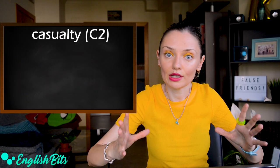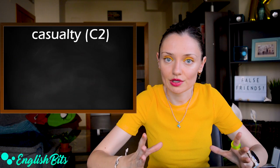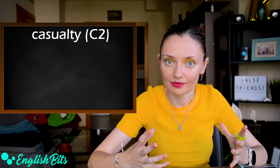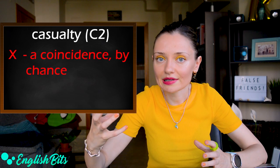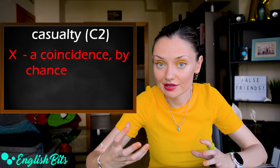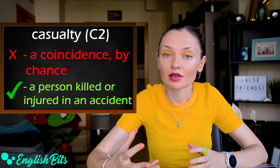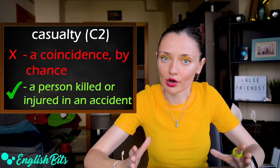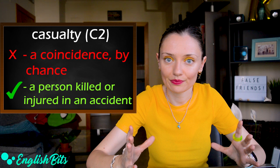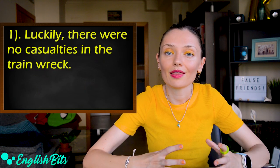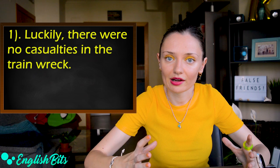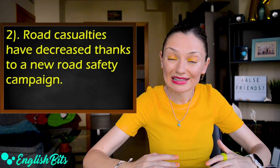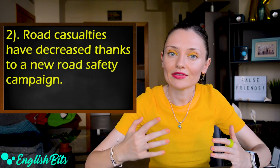And now let's continue. We're going to look at three nouns. Number six: 'casualty.' In English, it doesn't mean a coincidence or by chance. It means a person killed or injured in a serious accident or war. Examples: 'Luckily, there were no casualties in the train wreck.' And: 'Road casualties have decreased thanks to a new road safety campaign.'